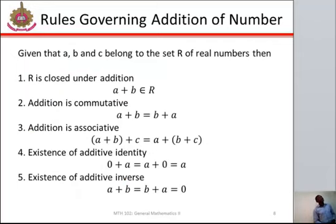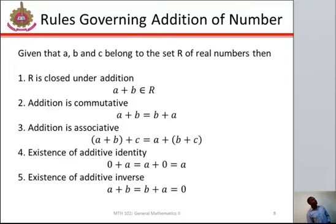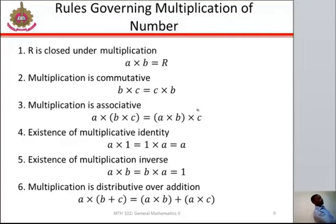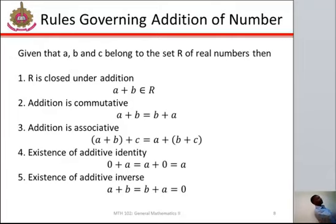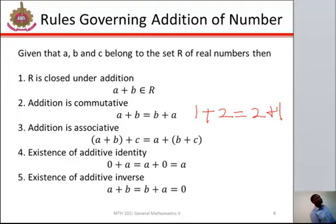Then there are some rules governing addition of numbers. One of the rules is R is closed under addition — that is, when you add integer A plus integer B, you are going to have a set number from natural numbers. Another rule is addition is commutative — that is, when you have A plus B and B plus A, the answer should be the same. If A is 1 and B is 2, your answer will be 3. Likewise, if you have B plus A, your answer should also be 3.